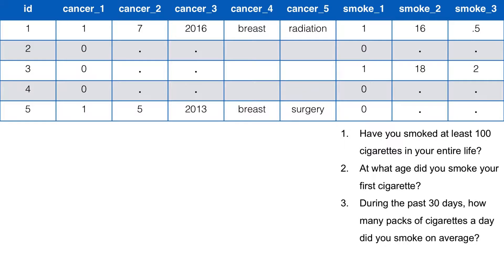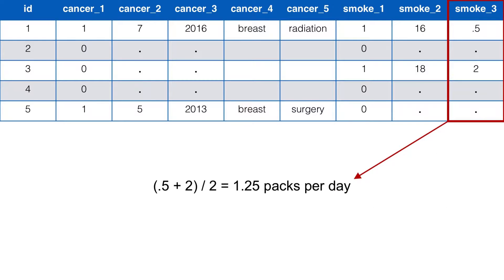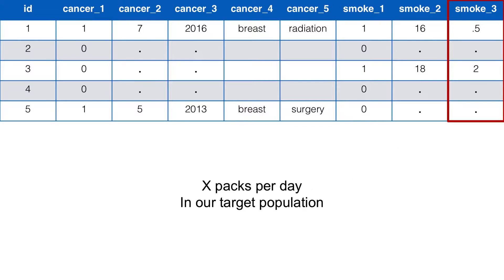Let's first look at the smoking questions. Suppose we want to know the average number of packs per day smoked in our target population. Our first instinct may be to take the average value of smoke3. That would give us an average of 1.25 packs per day. And if we qualify this answer by saying among smokers in our target population, then this answer is what we're looking for — we're done. But that isn't what we said we wanted to know. Our original question was about the average number of packs per day smoked in our target population, period.